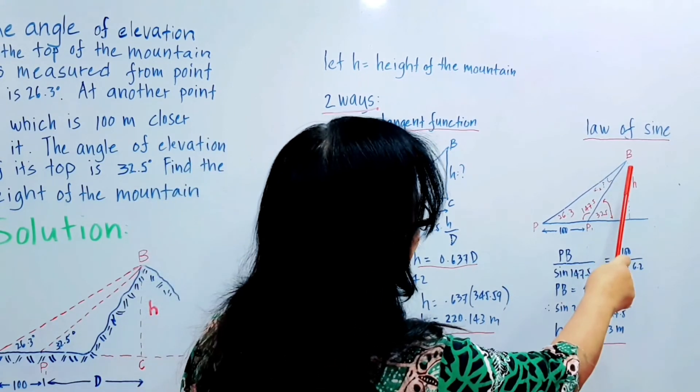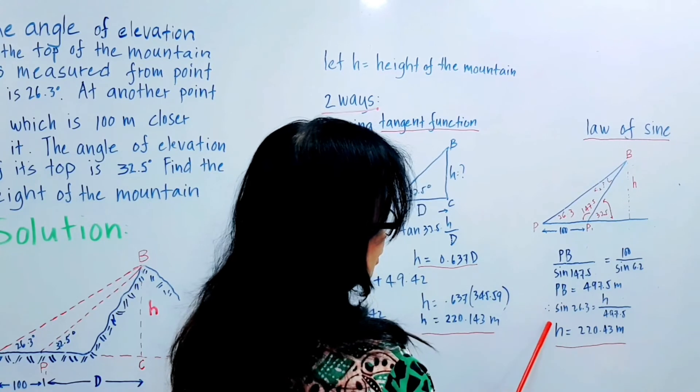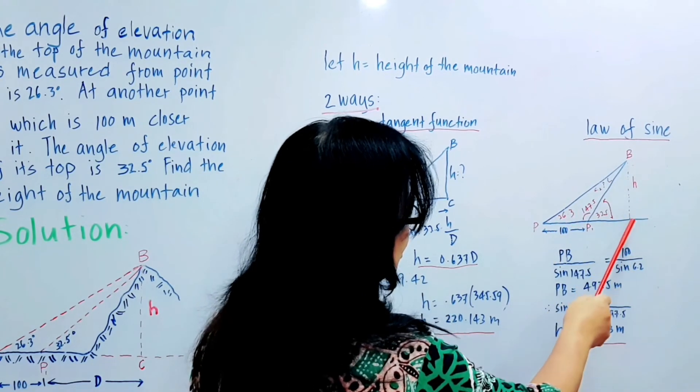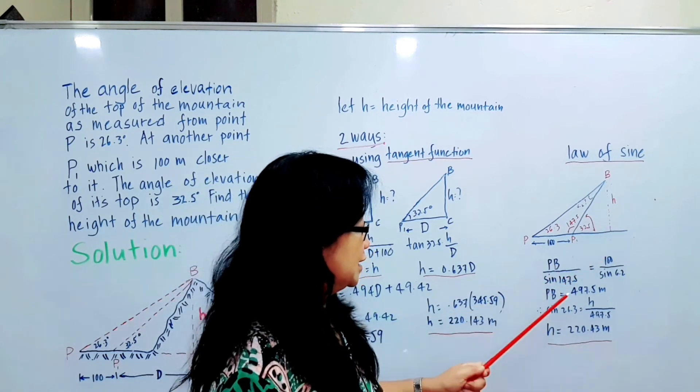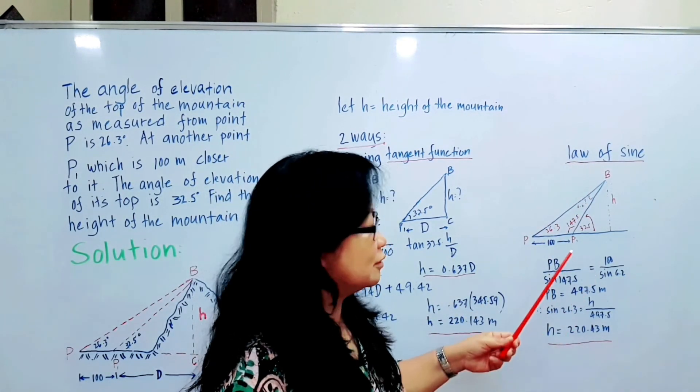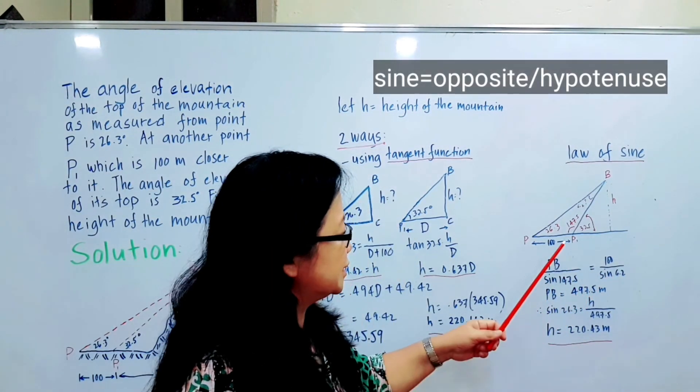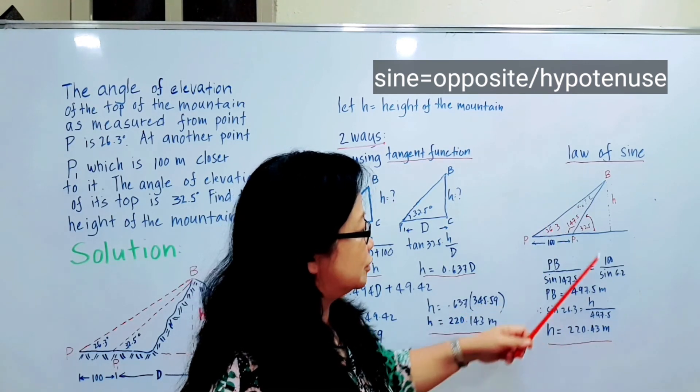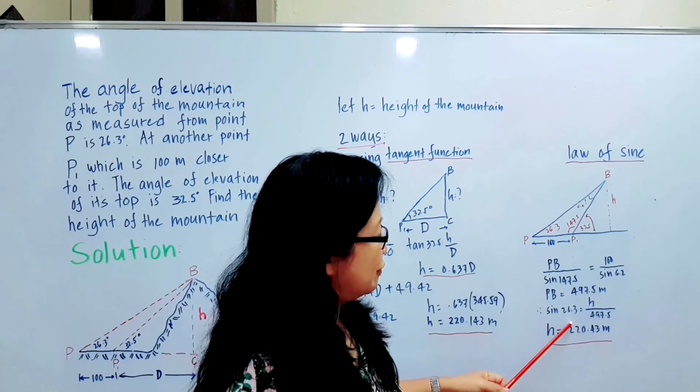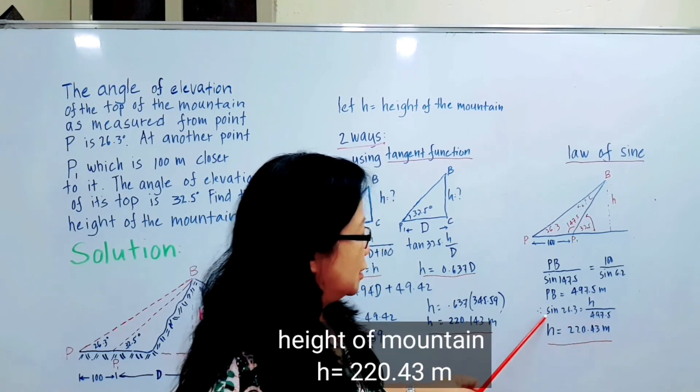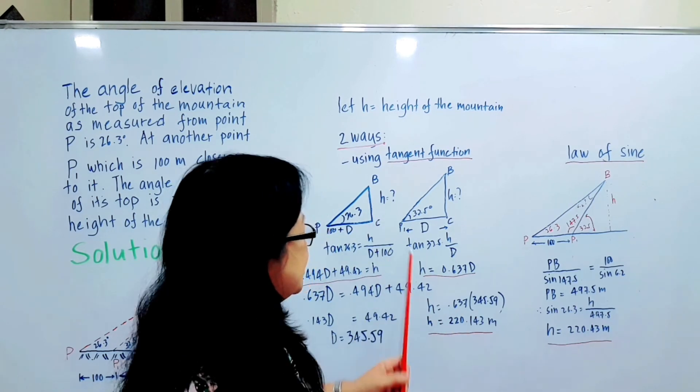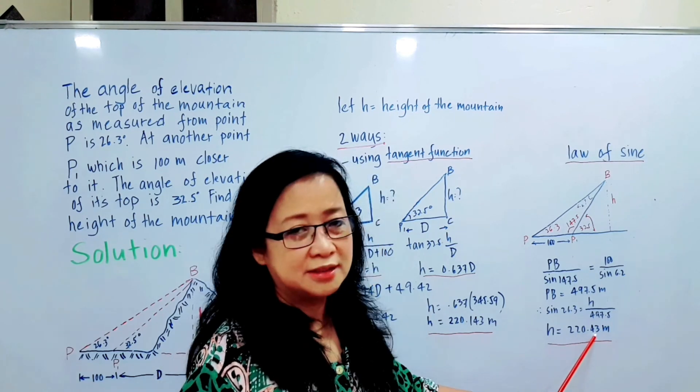Now to find the height of the mountain, you can use the sine function. Since we have the length of PB, to find the height we will use the sine function. Sine 26.3, which is this one, equals the height over the hypotenuse, which is PB. Therefore, solving this will result to H, which is the height of the mountain, 220.43 meters. There is a little difference with the one using the tangent function, but it's okay, it's just 0.43 or 0.143.